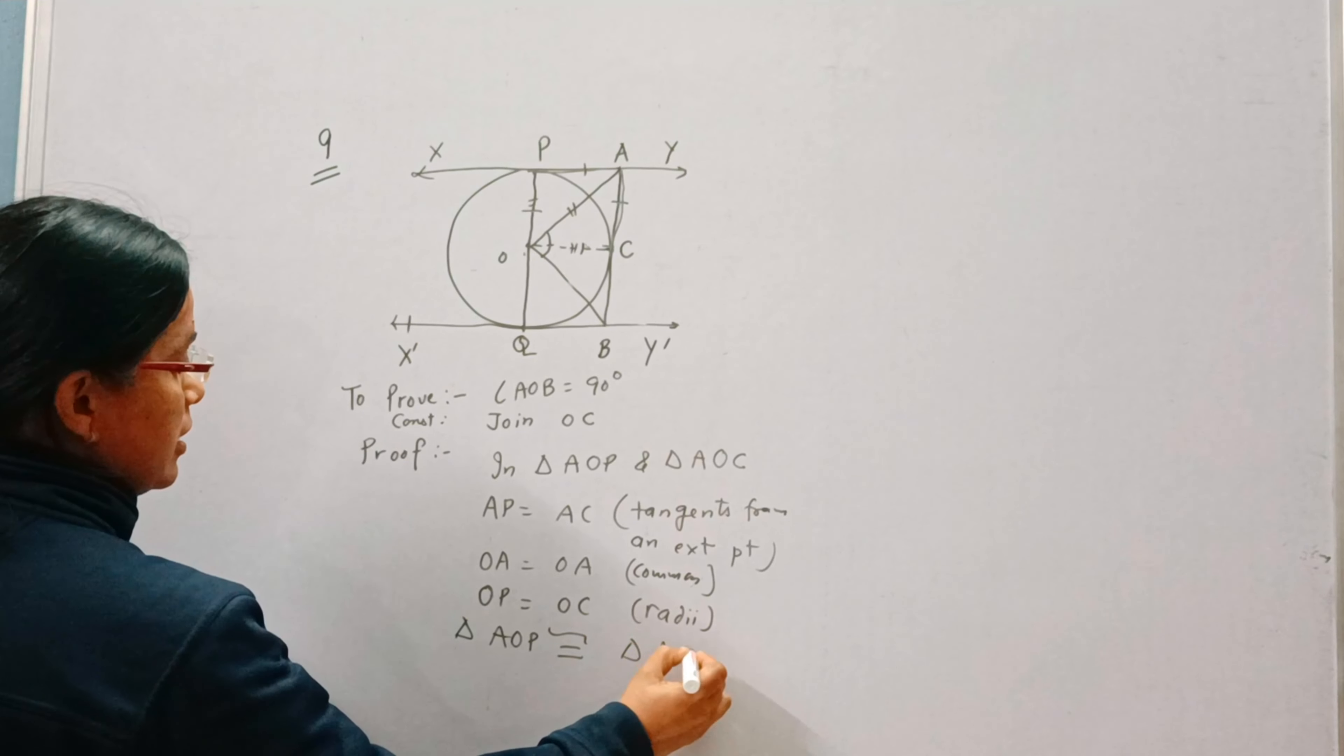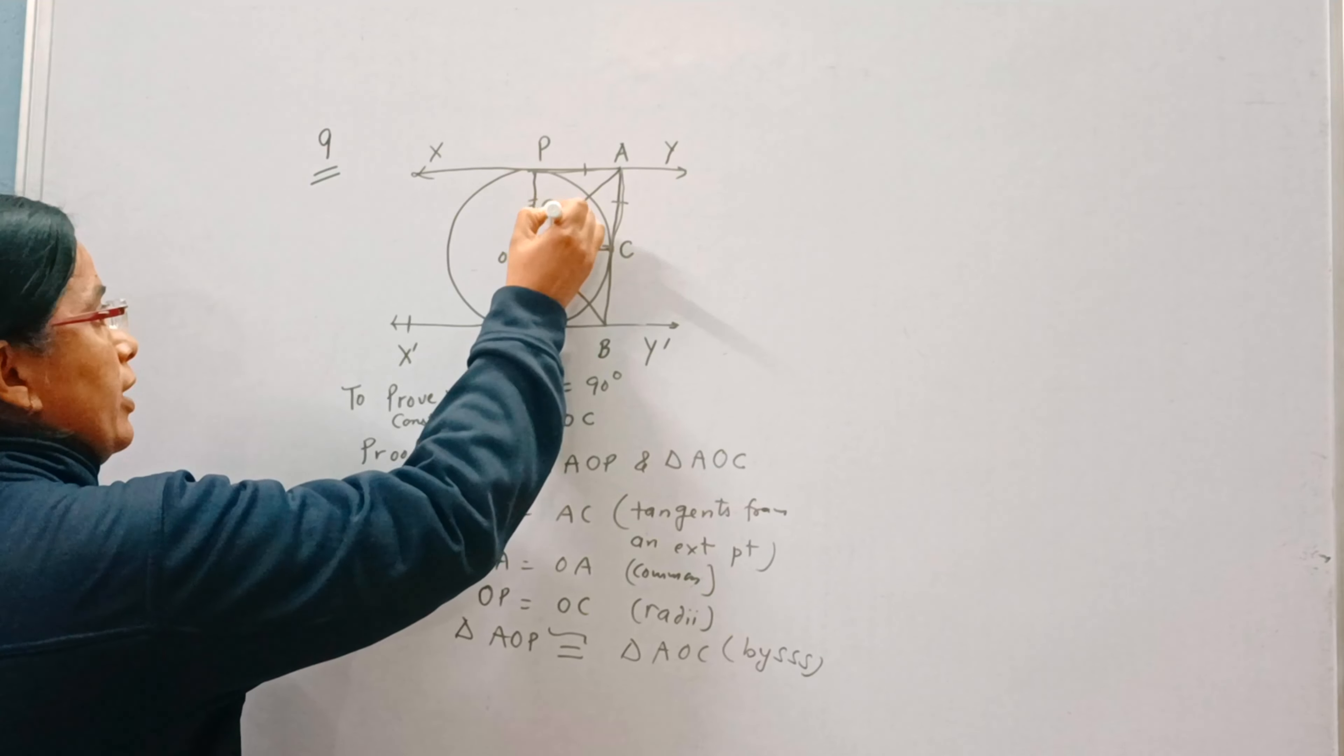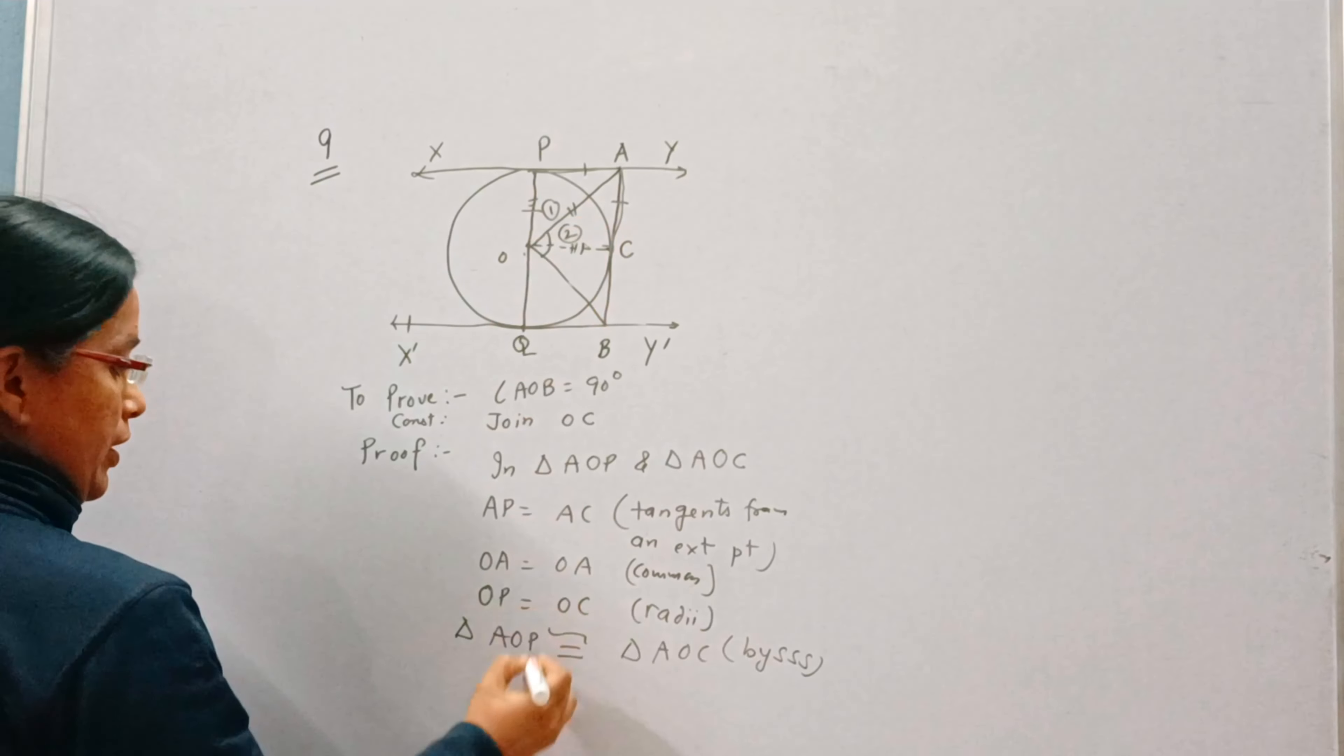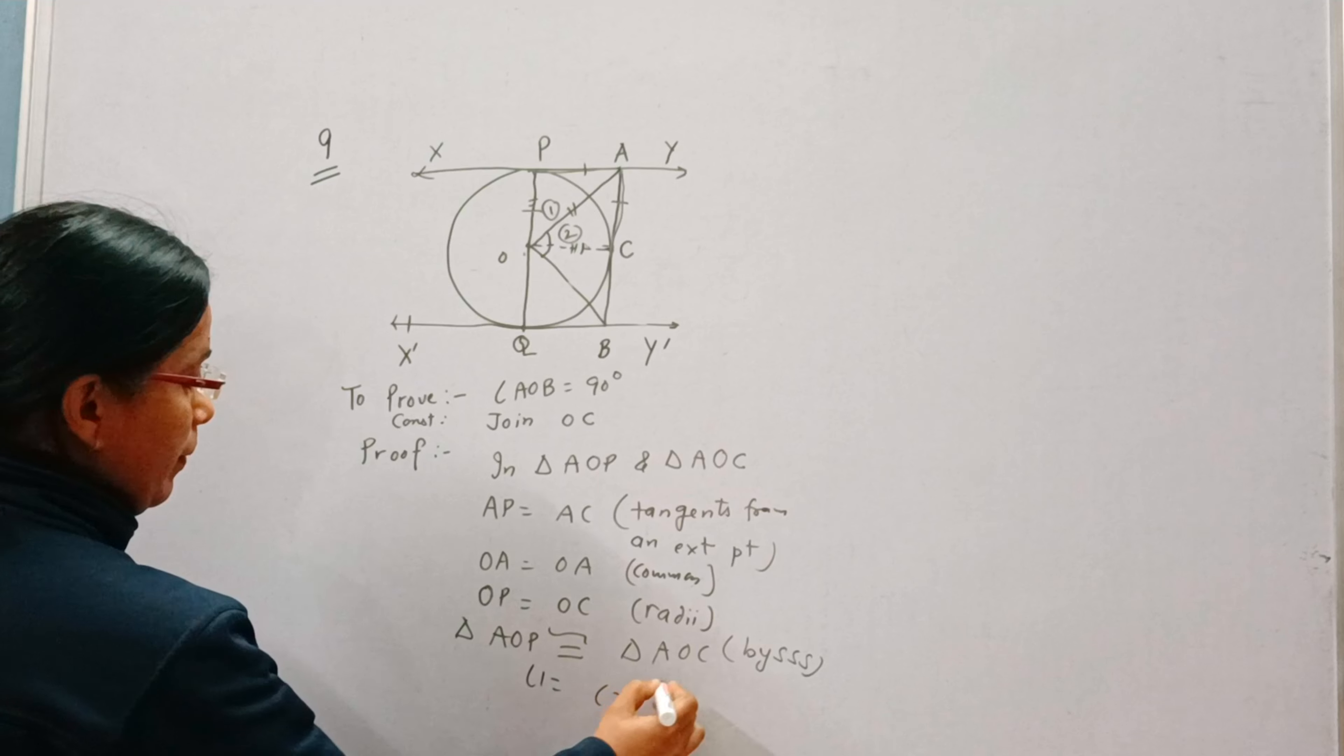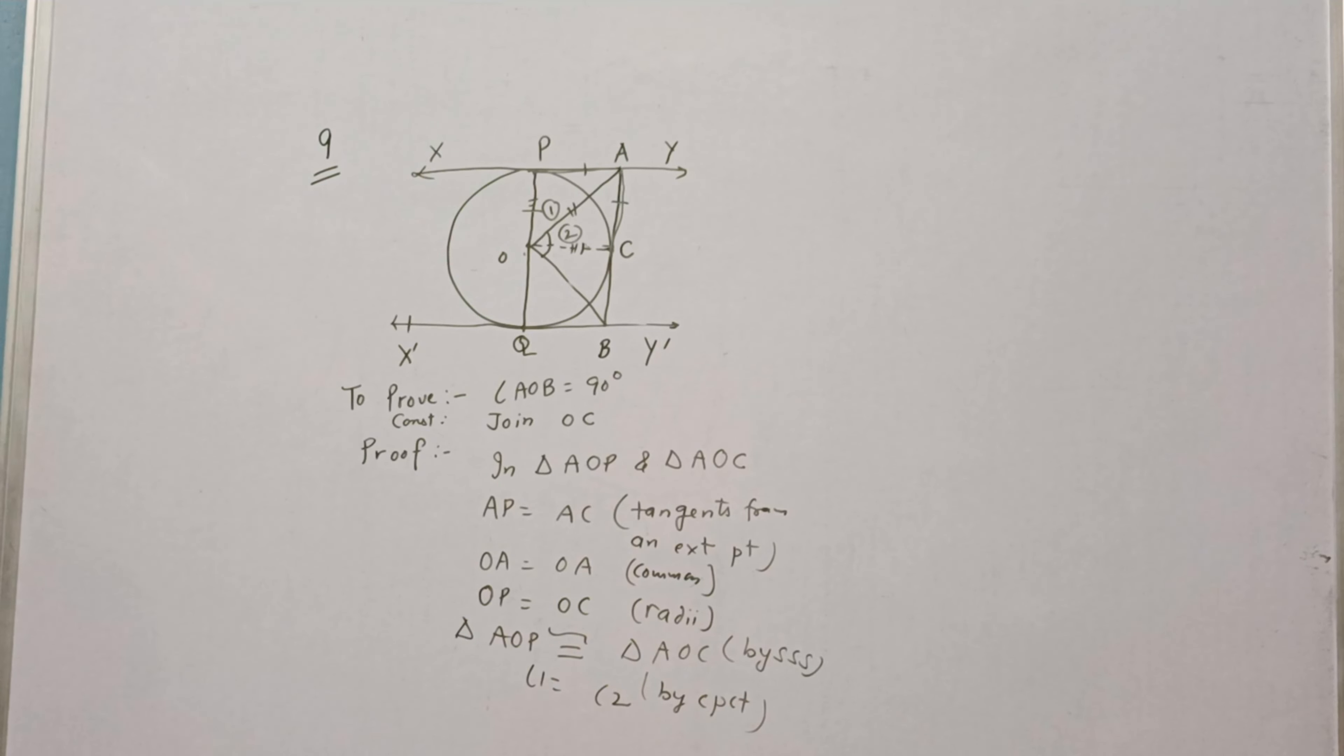So the two triangles are congruent by sss, means side side side. And if the two triangles are congruent then we can write angle 1 is equal to angle 2 by cpct. This we can do. Angle 1 equal to 2.